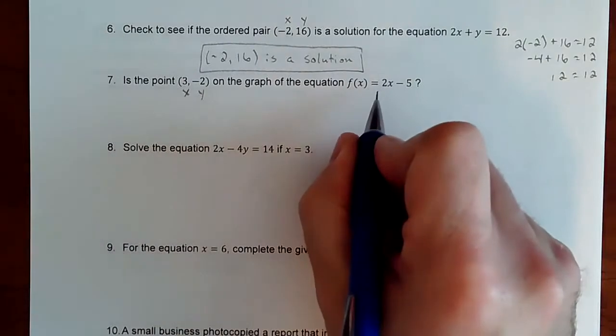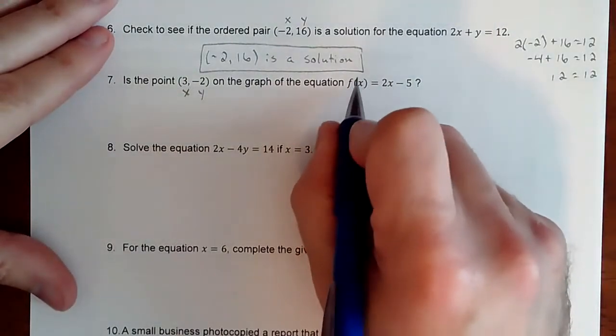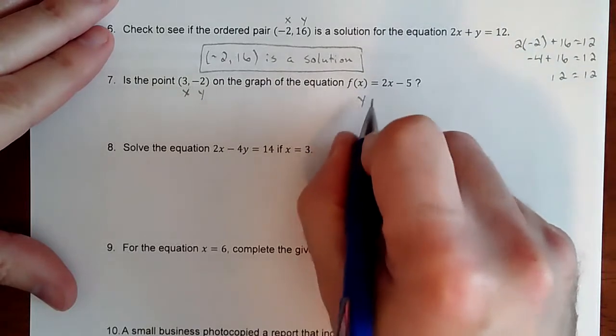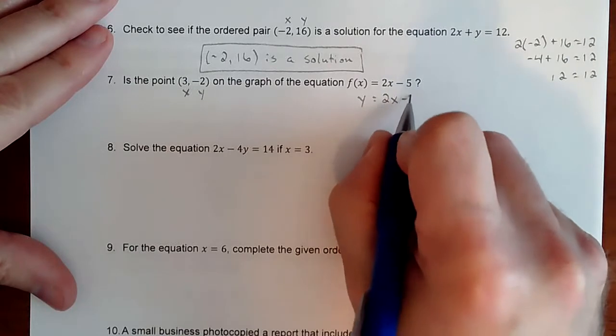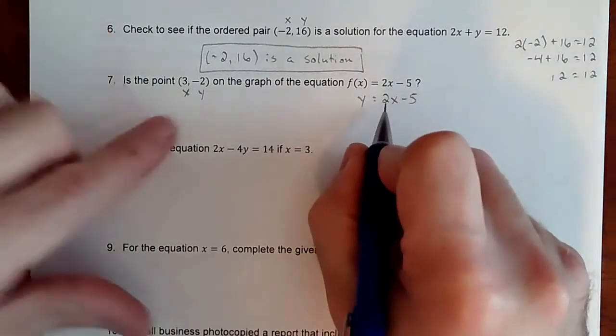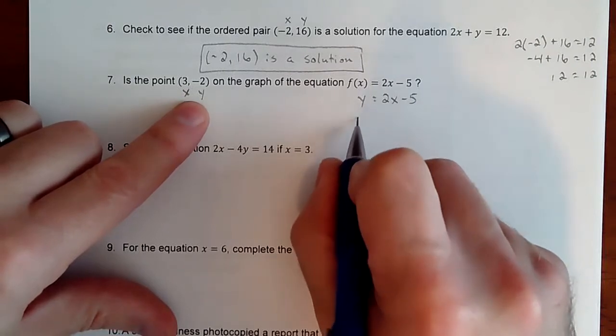Now this is giving it a little bit of a different format. It's called function notation. This f of x is how you say that, really just means y. Okay. So this is what you're looking at. So we're going to plug in our x value, which is 3. We're going to plug in our y value, which is negative 2.